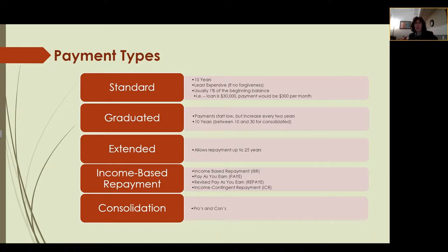If you are not eligible for any kind of public service loan forgiveness — meaning you don't work for a charitable, government, or educational organization — a graduated loan may be helpful to you, especially on the consolidated side. It allows payments to be lower in the first few years, and as your income goes up the payment amounts can go up without impacting you as much financially. Extended payment allows repayment up to 25 years; each of these options is more expensive because we're stretching out the payment over time at your average student loan interest rate.